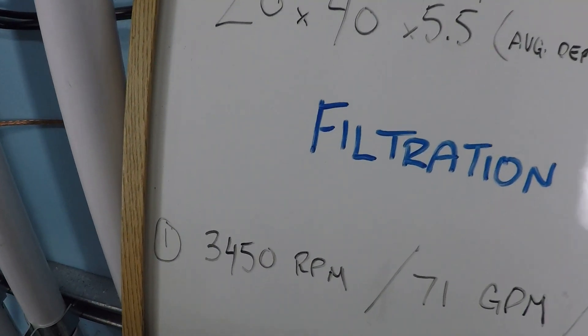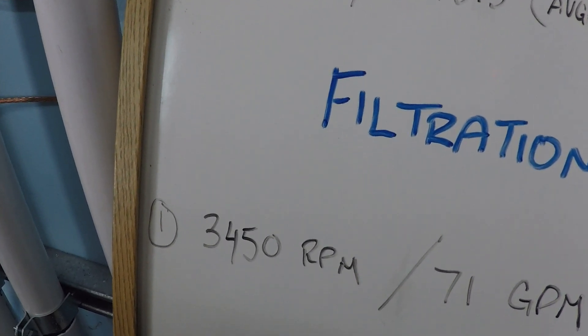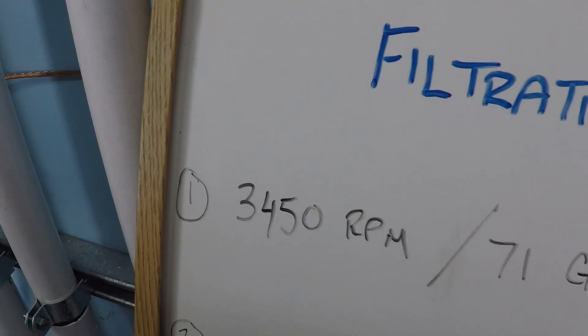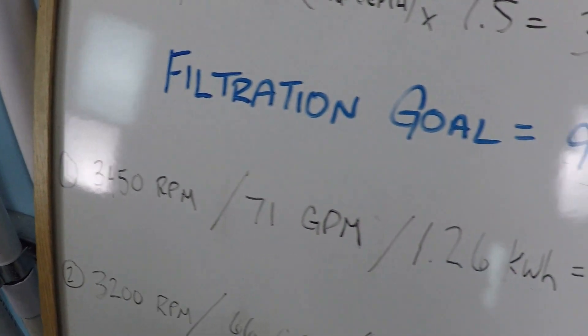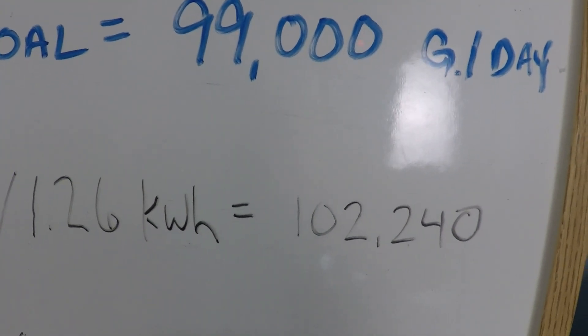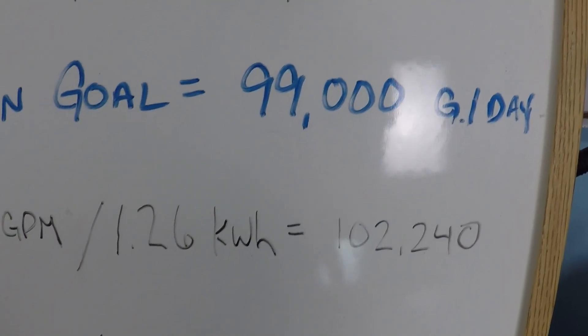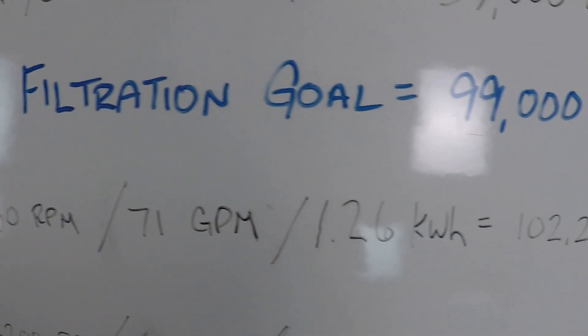If you had a single speed pump at around one and a half horsepower or you ran this super pump variable speed at the maximum RPM around the clock, 24 hours a day, you would achieve 102,240 gallons. Our goal is 99,000 gallons a day. That's pretty much bang on right there. So that's it. There's no benefit.